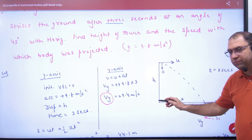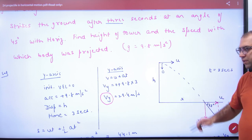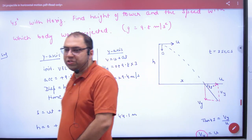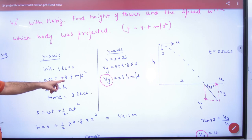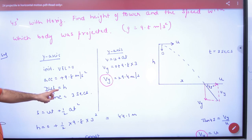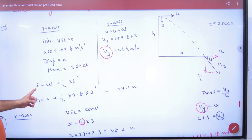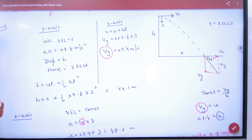One thing is to find height — height is on the y-axis. In the y-axis, the initial vertical velocity is 0. With displacement h and time t = 3 seconds, using s = ut + ½at²: h = ½ × 9.8 × 3² = 44.1 meters.